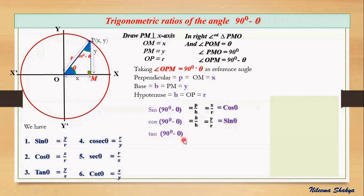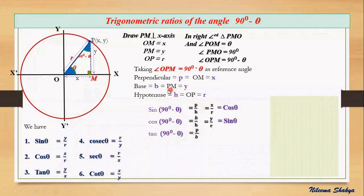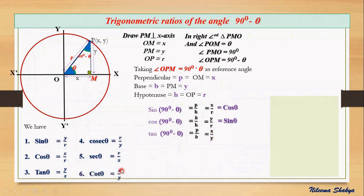The third ratio: tan(90° − θ). It is perpendicular by base. The perpendicular is x and the base is y, so tan(90° − θ) = x/y. Looking at ratio number 6 from our list, cot θ = x/y, so we can replace x/y by cot theta. Therefore tan(90° − θ) = cot θ.